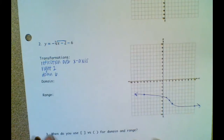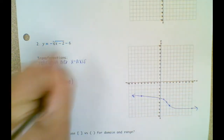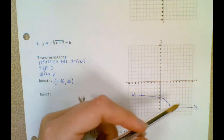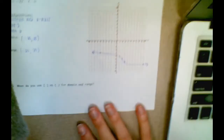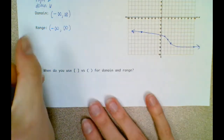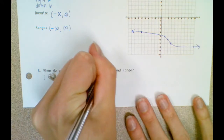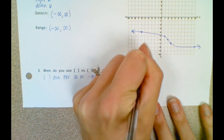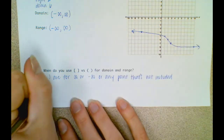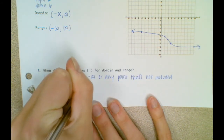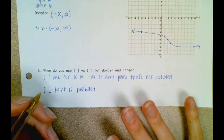For the domain of this graph, my most left x-value has an arrow, so it's pointing towards negative infinity, and the right side of the graph points towards positive infinity. These will both be parentheses because that's what I use on infinity symbols. And then the range: my lowest y-value goes to negative infinity, and my highest y-value goes up towards positive infinity, so use parentheses. When do you use brackets versus parentheses for domain and range? Parentheses are for positive or negative infinity or any point that's not included. We use brackets when the point is included or it exists.